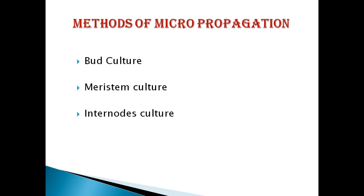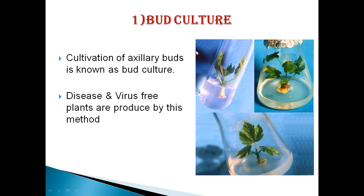There are three methods of micropropagation: first is bud culture, second is meristem culture, and third is internode culture. In bud culture, cultivation of axillary buds is performed — we select a bud from plant tissue, sterilize it, and inoculate it on tissue culture media. After incubation in shooting media, it leads to the formation of a shoot from the bud directly — this is called direct organogenesis, meaning formation of an organ or shoot from the bud directly without callus. Disease- and virus-free plants can be produced by this method.